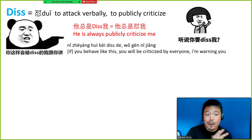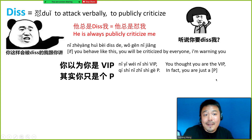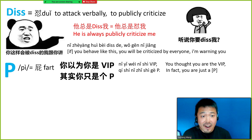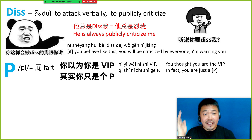Now I'm going to show you an interesting sentence to diss someone. The sentence is 你以为你是VIP — you think you are the VIP, the very important person. 其实你只是个屁 — in fact, you are just a P. P is the homophone of the Chinese word for fart, which is 屁. This sentence is just a joke. As good friends we always like to diss each other, so with someone you're not so familiar with, I suggest you don't say this.